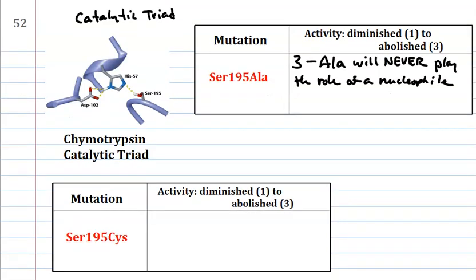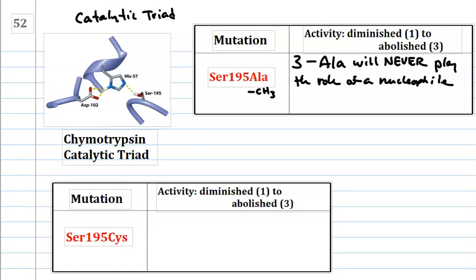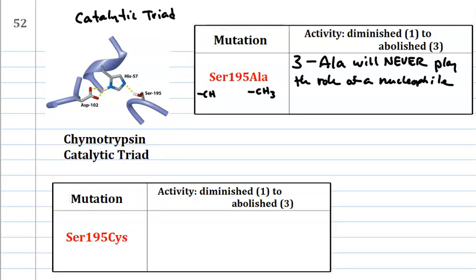Serine 195 cysteine. Hmm, interesting. So we had an OH versus CH3 here. Well, just for full disclosure, this is really CH2OH for serine. And just CH3 for alanine, that was really the comparison, right? Well here the comparison is CH2OH and CH2SH. Interesting.